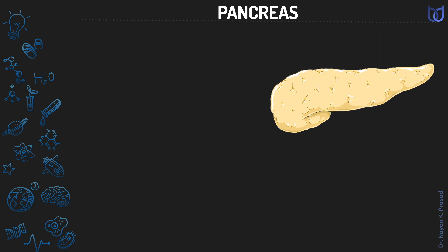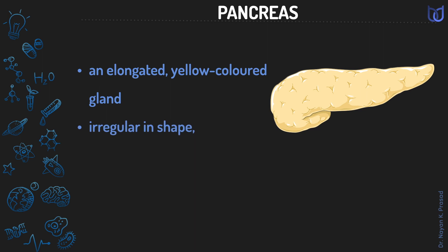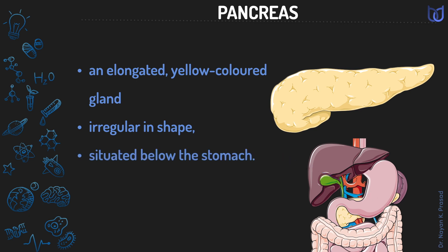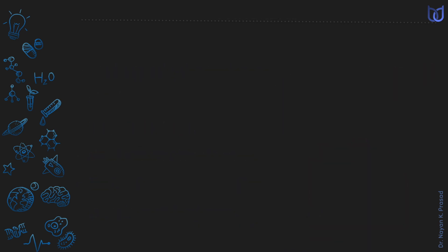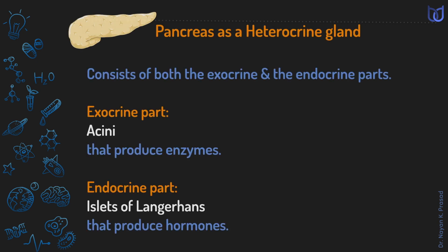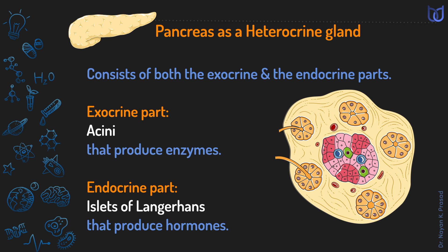Another endocrine gland is the pancreas. Pancreas is an elongated, yellow-colored gland of irregular shape, situated near the stomach. The head of the pancreas lies in the loop of the duodenum, part of the small intestine. The pancreas is a heterocrine gland with both exocrine and endocrine parts. The exocrine part consists of branching tubules called acini, which produce digestive enzymes transported by ducts into the duodenum. The endocrine part consists of numerous pancreatic islets, also called islets of Langerhans.